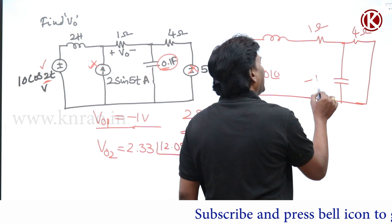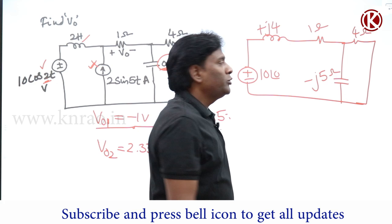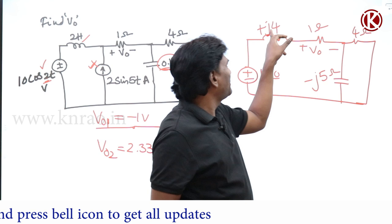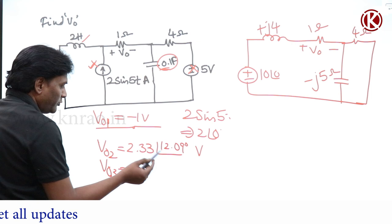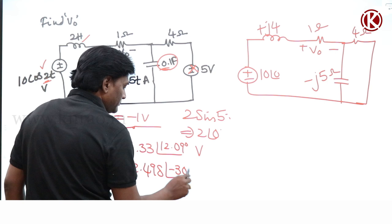Now ω = 2, so for the capacitor: 1/(ωC) = 1/(2×0.1) = 5, giving −j5 ohm. For the inductor: jωL = j×2×2 = +j4 ohm. Calculate v_naught using parallel combination: Z1·Z2/(Z1+Z2), then 10 at angle 0° divided by total impedance gives current, and that current times 1 ohm is v_naught. Result: V03 = 2.498 at an angle of −30.79°.